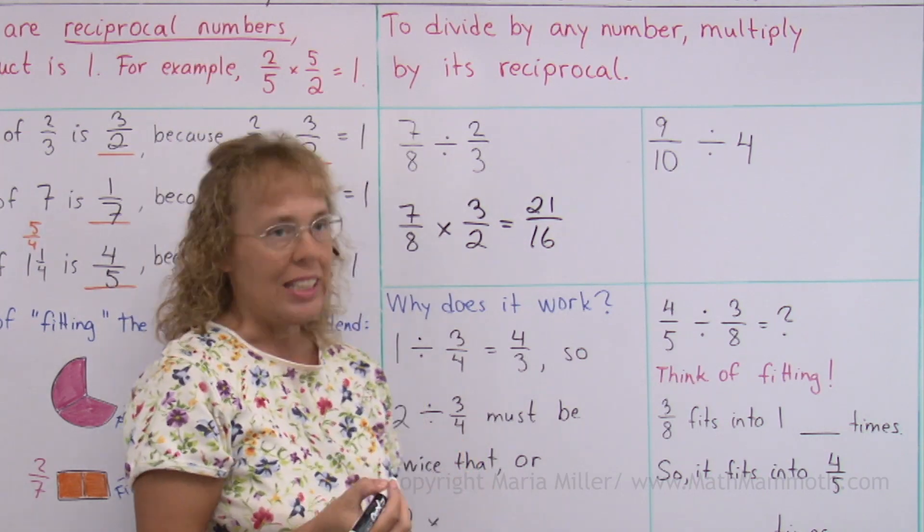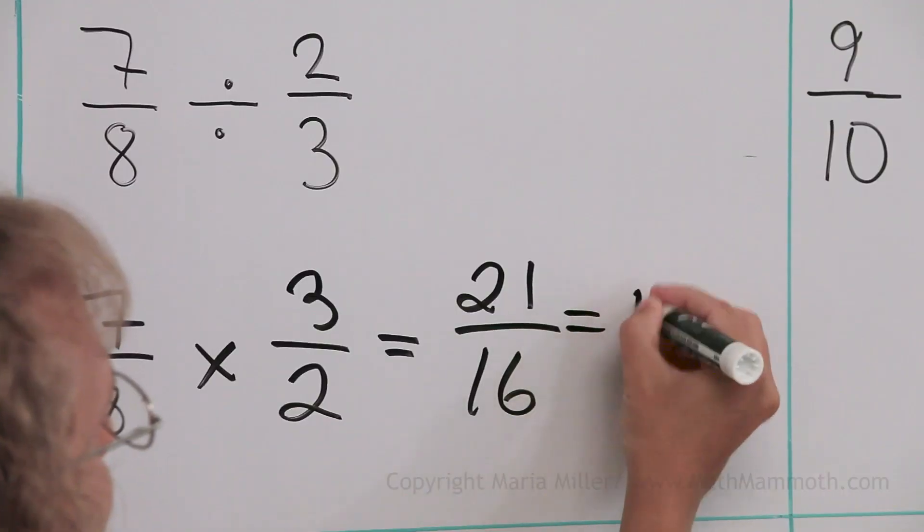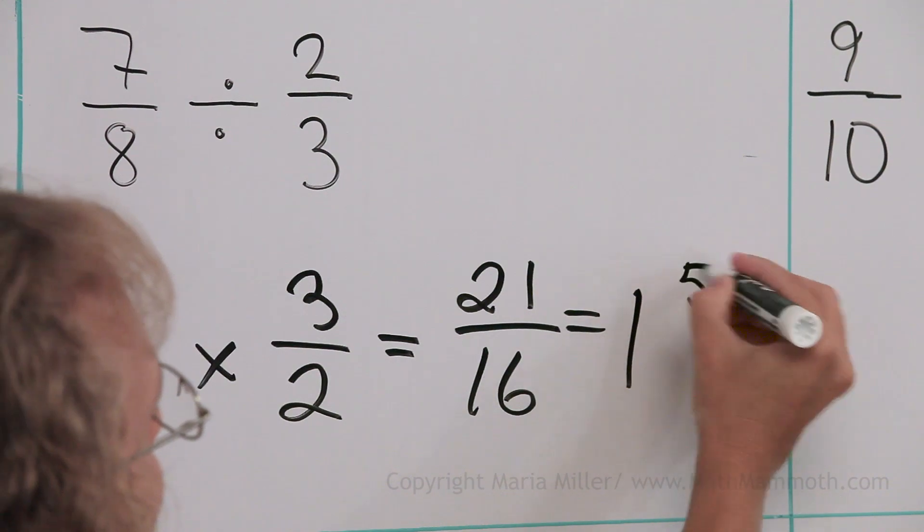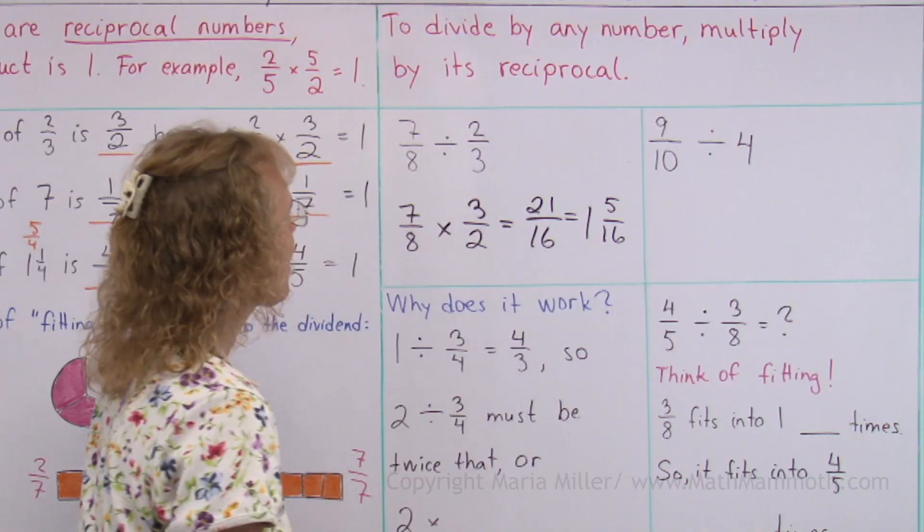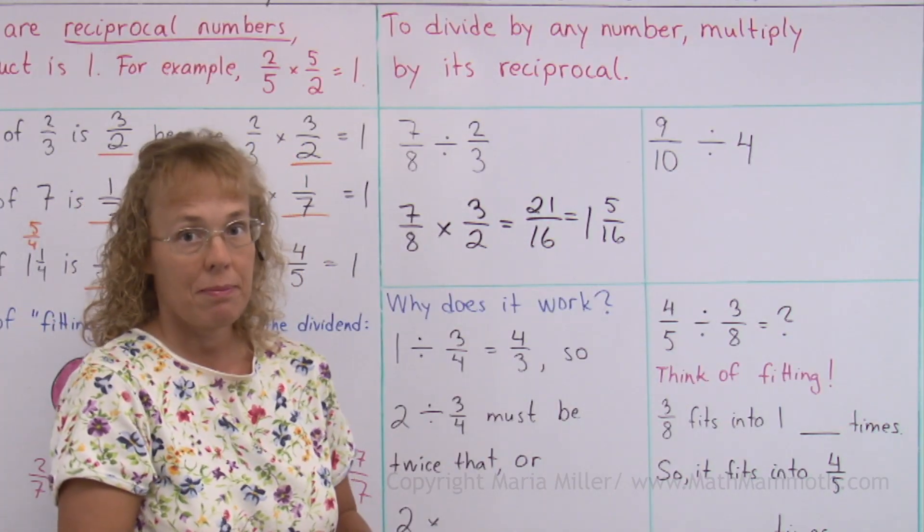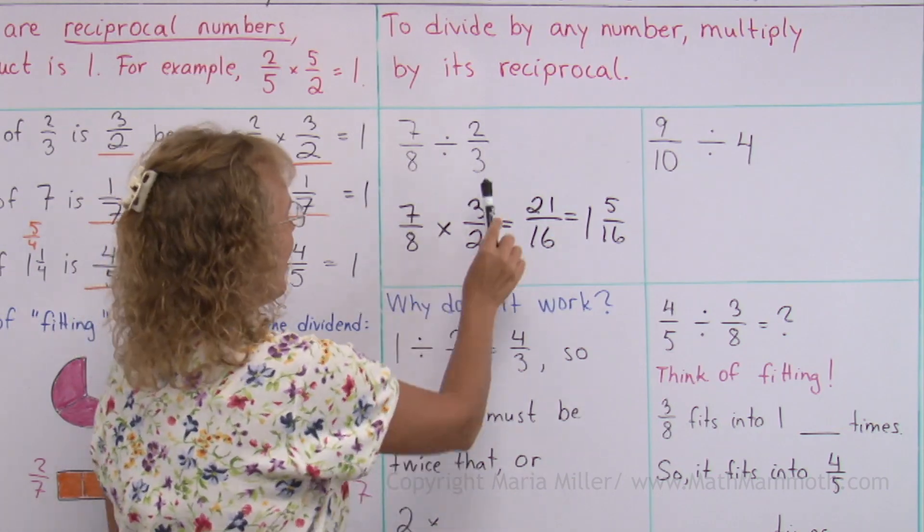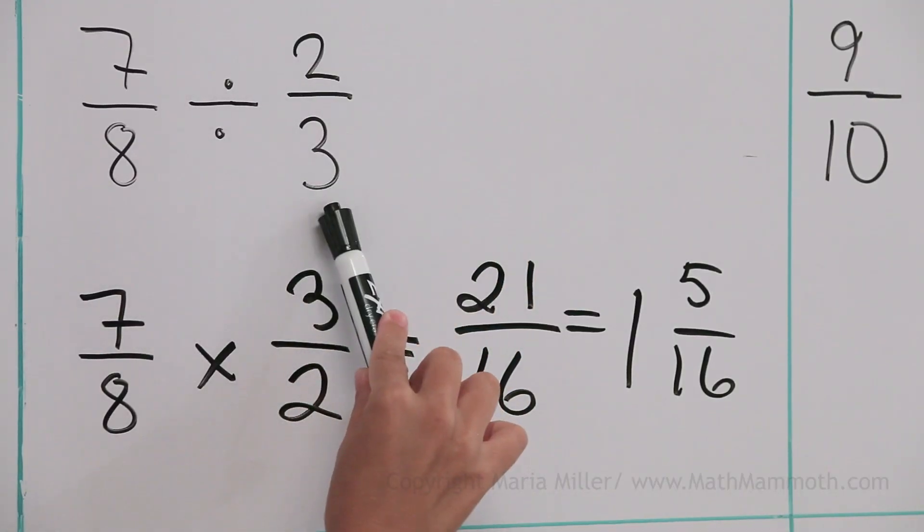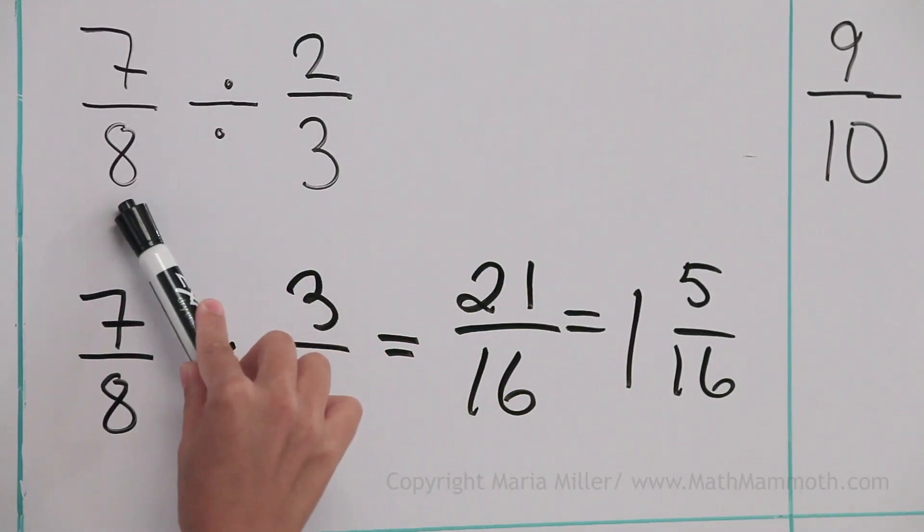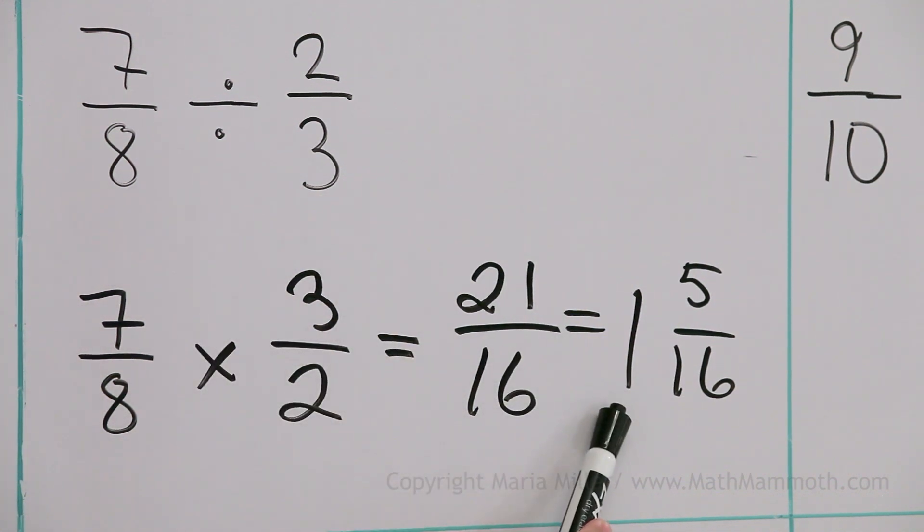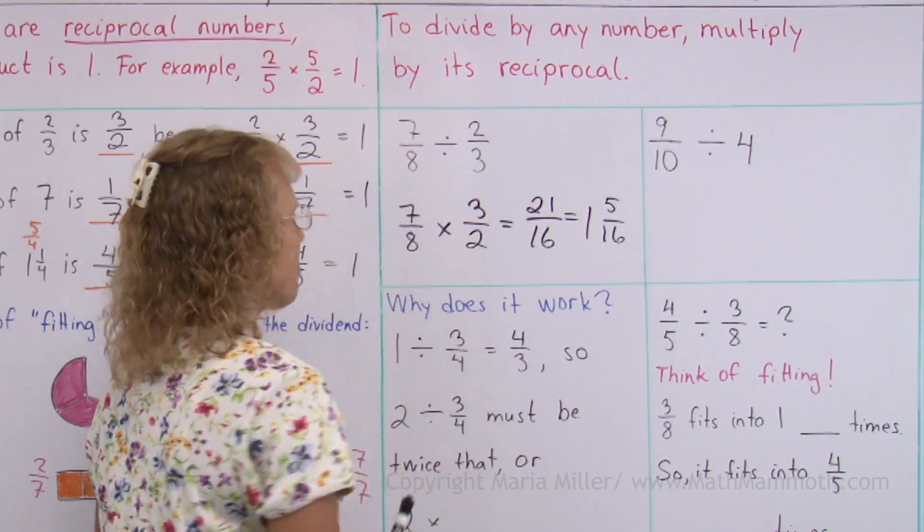And then lastly, write it as a mixed number. It's 1 whole and 5 sixteenths. Does it make sense? You can think of the fitting. 2 thirds fits into 7 eighths somewhat over one time. Yes, that makes sense.